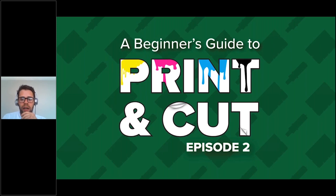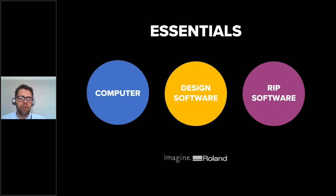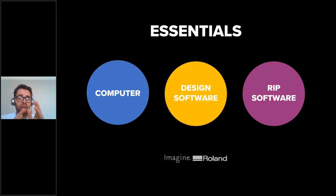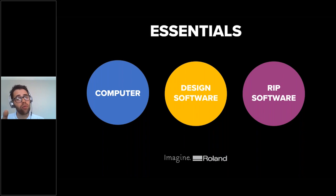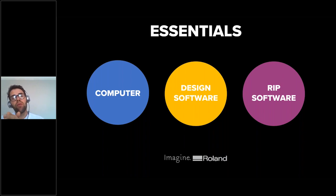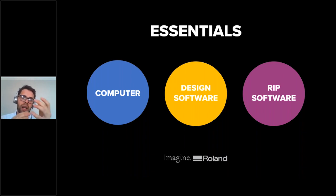In part one of our webinar series we went through a few essentials. When it comes to software there's a platform you need to be using firstly — your computer — and to run design software in particular you're going to need something fairly powerful: a decent CPU, which is the computer's brain, and a decent amount of RAM, which is the computer's working memory. That's the platform you'll run your design software and your RIP software from.